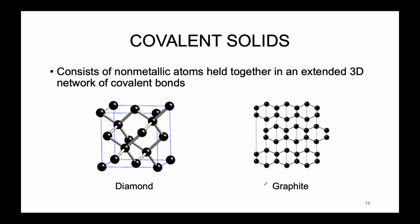Of course, not all solids in the world are made up of metals or ionic crystals — there are also the covalent species as well. There are two different forms that covalent bonds can take inside of some type of solid crystal. The first is known as a covalent solid. This is going to consist primarily of non-metallic atoms held together in extended 3D networks of covalent bonds. Diamonds and graphite, both comprised of carbon, are excellent examples of covalent solids.